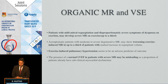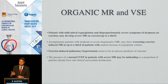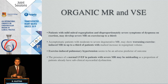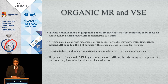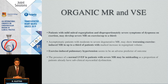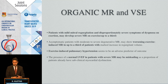In organic MR and valve stress echo, key findings are: one-third of patients with mild MR and disproportionately severe symptoms develop severe MR on exercise echo. Asymptomatic patients with moderate to severe degenerative MR show marked increase in regurgitant volume in up to one-third. Exercise-induced pulmonary hypertension appears to be an adverse prognostic marker, and a normal ejection fraction in patients with severe MR may be misleading.